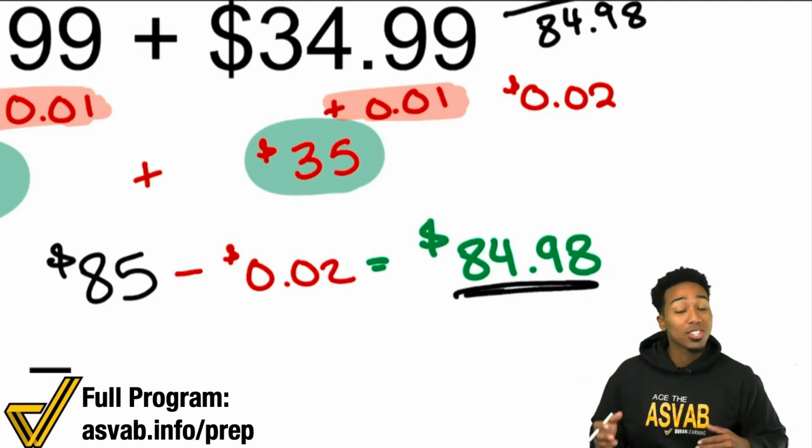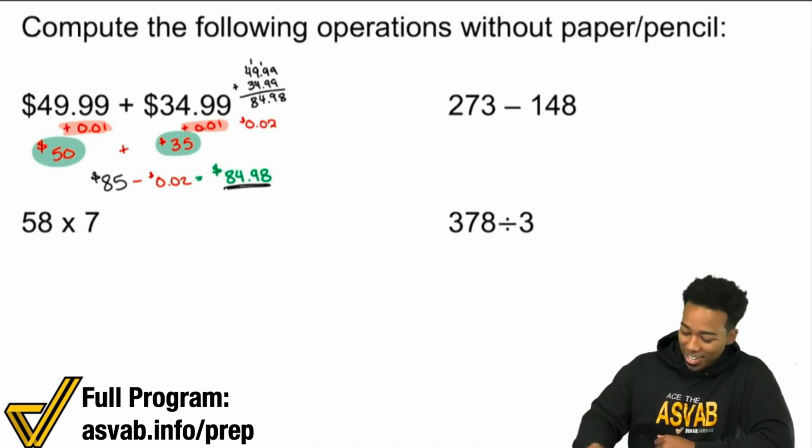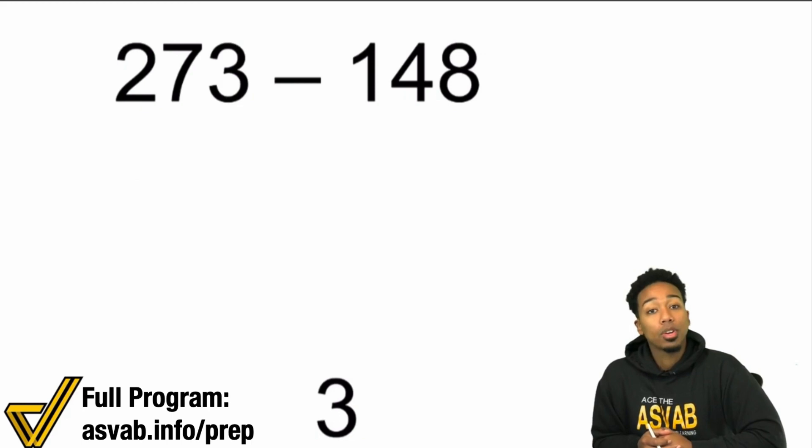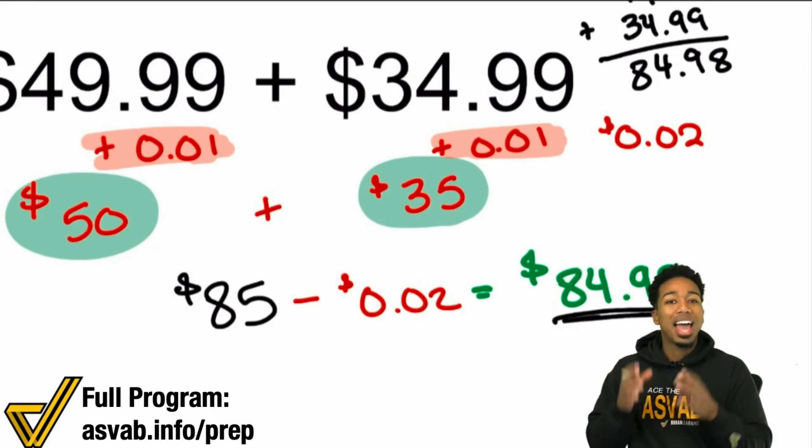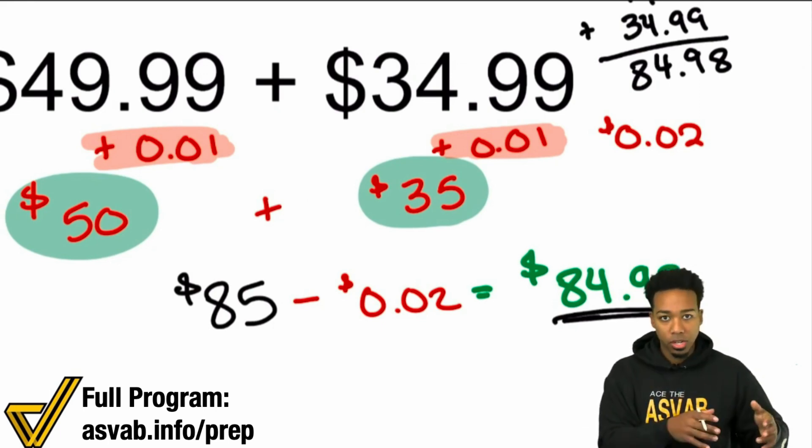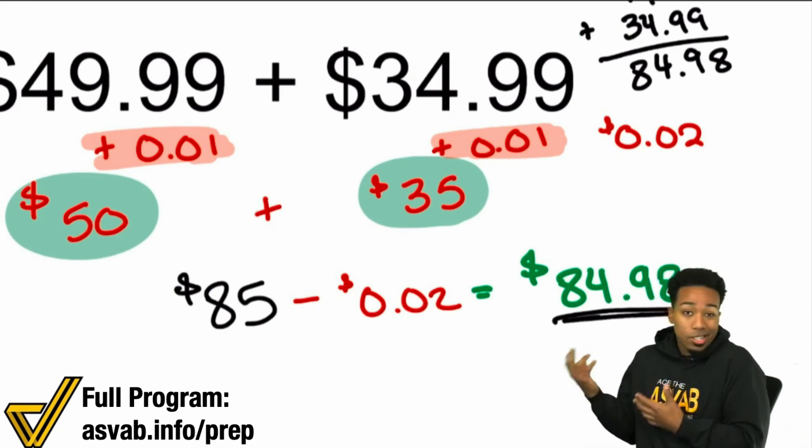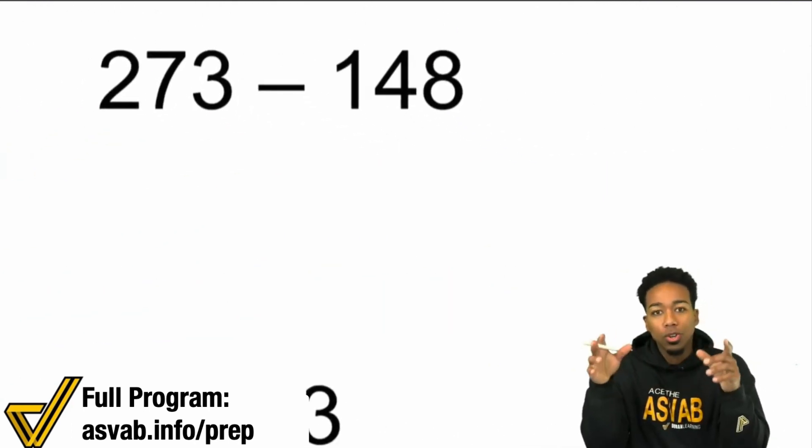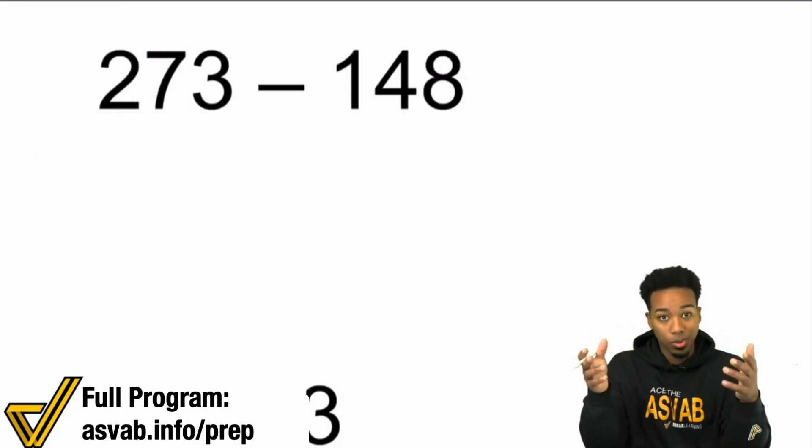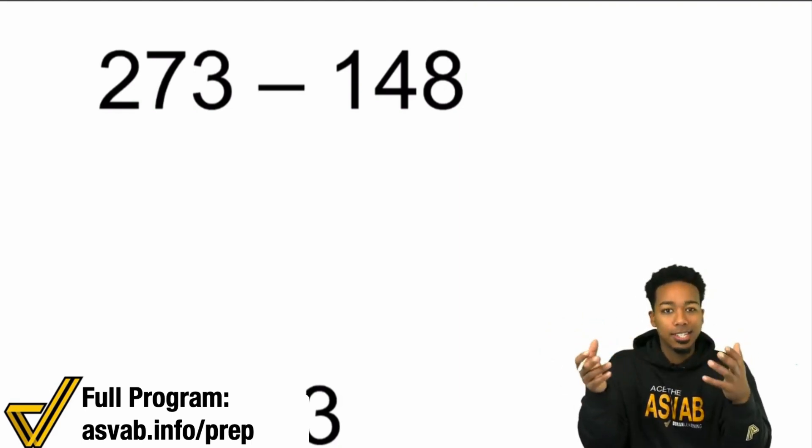There are strategies you can use for multiplication and division as well, as well as subtraction. So let's take a look at this second one here. 273 minus 148. So that first strategy that I showed you for the money problem, that's what's called estimation and compensation. So that's what I call it. I mean, you can see it called different things in the math world. But for me, when I discovered this for myself, I called it estimation and compensation. This over here, this is what's called, the strategy I'm going to use is called splitting and gluing.